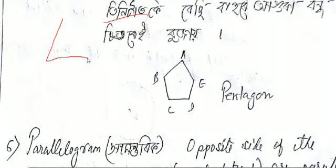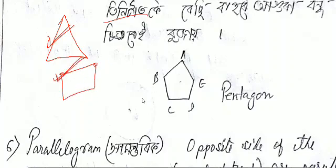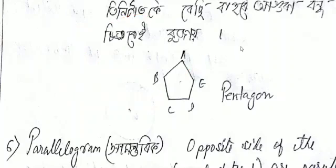So we have the triangle, next is the quadrilateral, then the pentagon, hexagon, octagon, and nonagon. These are the different shape types.